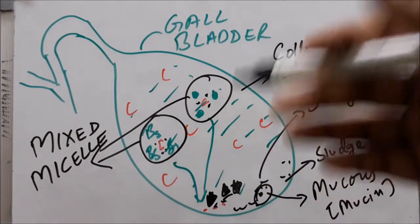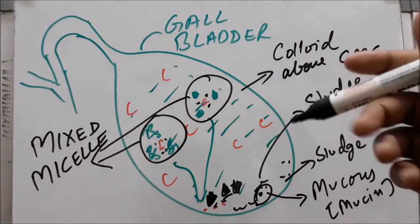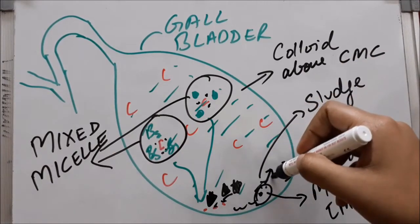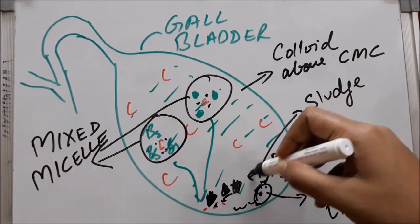Later they will be compiled into big stones. This is the basic pathophysiology. Secondly, if the monohydrate crystals form but the gallbladder contraction is good or the person has a good daily routine, these may be expelled.